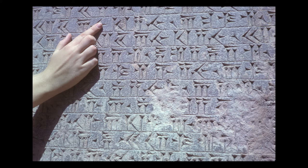Section 7: "And by the grace of Ahuramazda I became king of them: Persia, Elam, Babylonia, Assyria, Arabia, Egypt, the countries by the sea, Lydia, the Greeks, Ionia, Media, Armenia, Cappadocia, Parthia, Drangiana, Aria, Chorasmia, Bactria, Sogdia, Gandhara, Scythia, Sattagydia, Arachosia, and Maka — 23 lands in all."